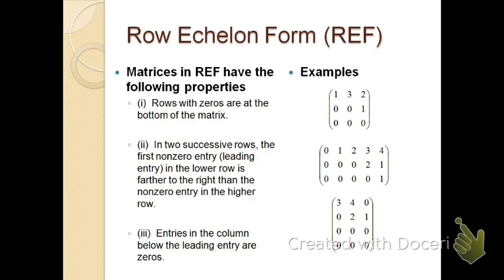Some properties we want to have are: first, rows with all zeros are at the bottom. Second, in two successive rows, the first non-zero entry — which we call a leading entry — in a lower row is farther to the right than the leading entry of the row above it.